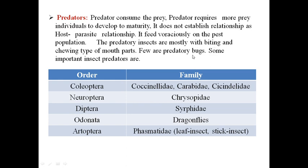Some predatory insects are bugs with a pointed proboscis like a syringe; they suck the juice of the prey. Important predatory orders and families include Coleoptera with families Coccinellidae, Carabidae, and Cicindelidae — all beetles widely used as predators in biological control.